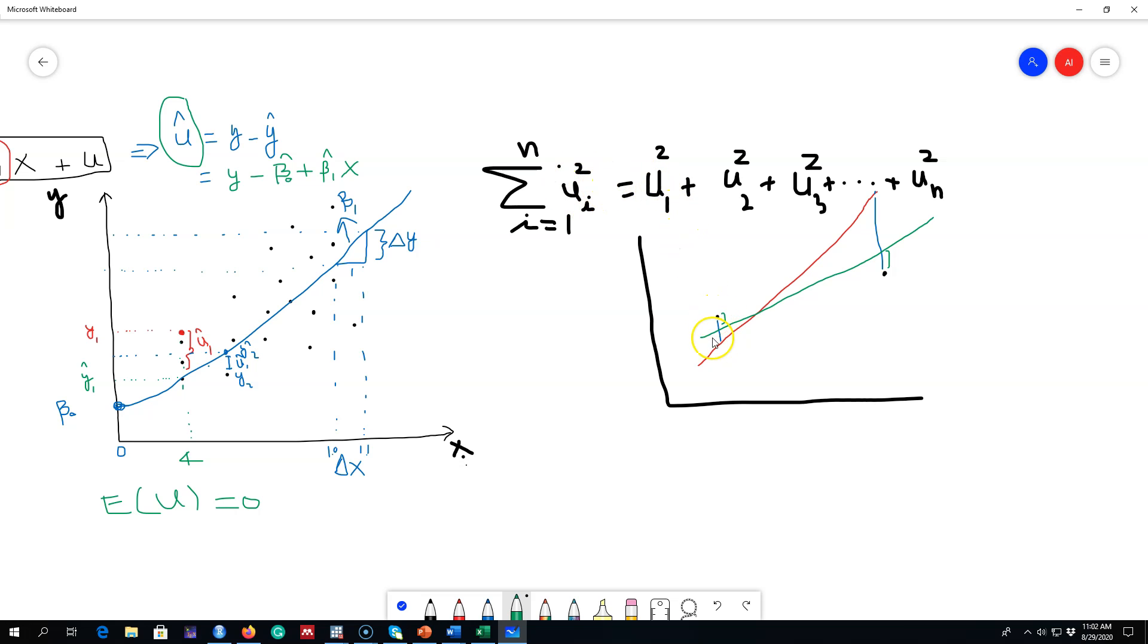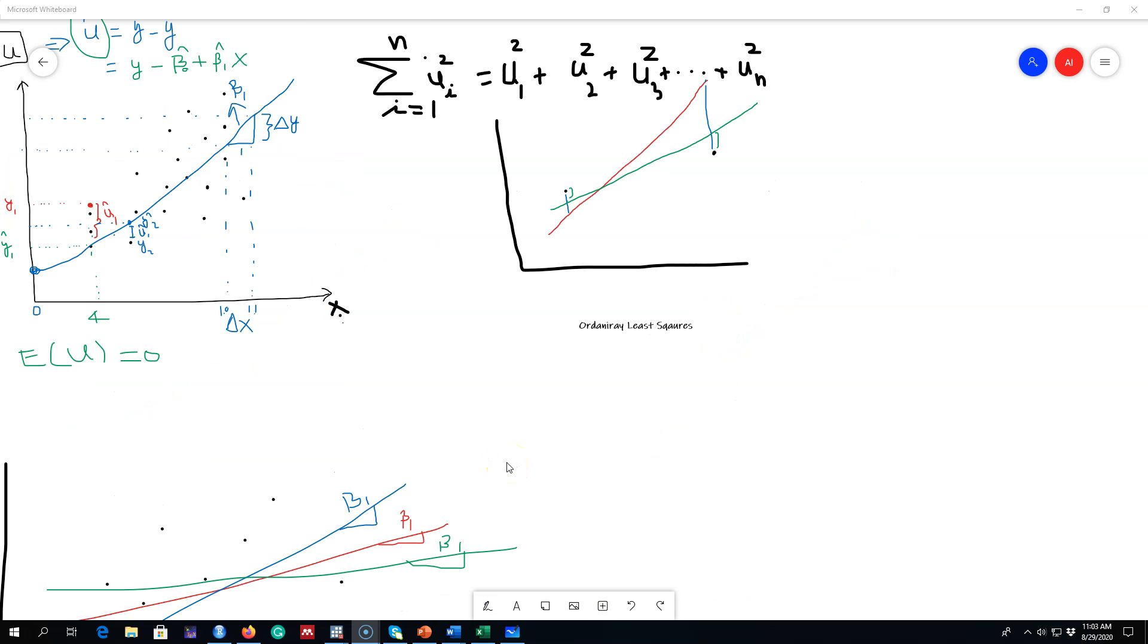So this brings us to the principles of Ordinary Least Squares. And what the principle of least squares does is it minimizes the sum of squares of those residuals that I explained earlier, from one to n, and it fits this line.